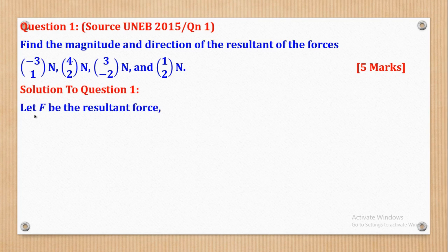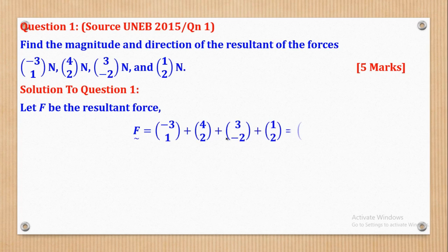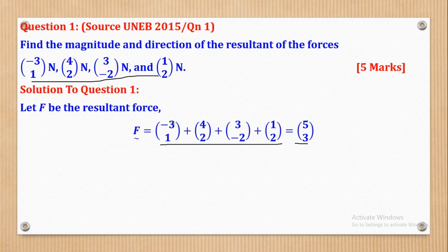We shall say that let F be the resultant force. Now when the forces are given in vector form, what you need to do is first add all the vectors to come up with the resultant force. When I add all these vectors, as you can see here, I'll come up with (5, 3) as my resultant force in vector form. 5 comes from adding negative 3, 4, 3, and 1.